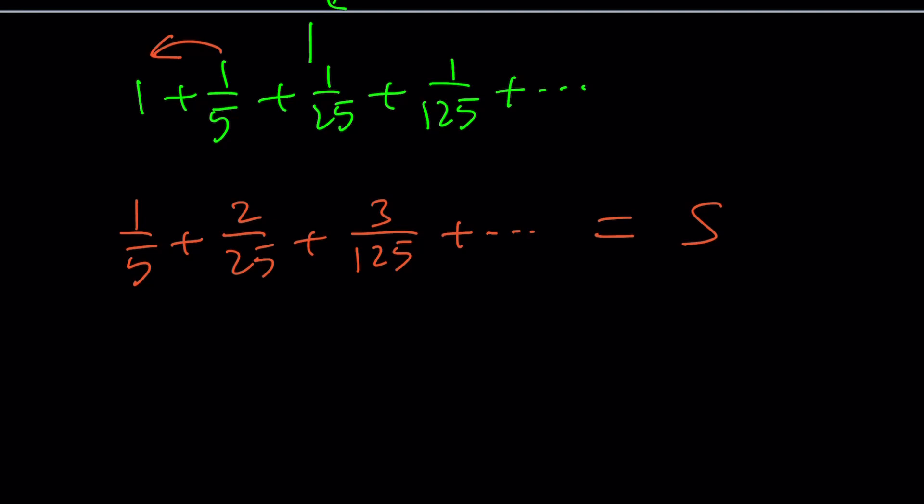If you multiply this by 1 over 5, you're going to get 1 over 25 plus 2 over 125 and then plus 3 over 625 and so on and so forth.